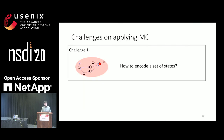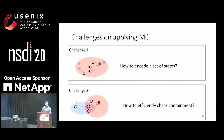Applying this framework, we see two challenges. The first is that since we consider very large sets of states, we need to efficiently encode them. The second is that we need to check whether one set of states is contained in another set. In this talk I'll focus on the first challenge; the second is covered in the paper.